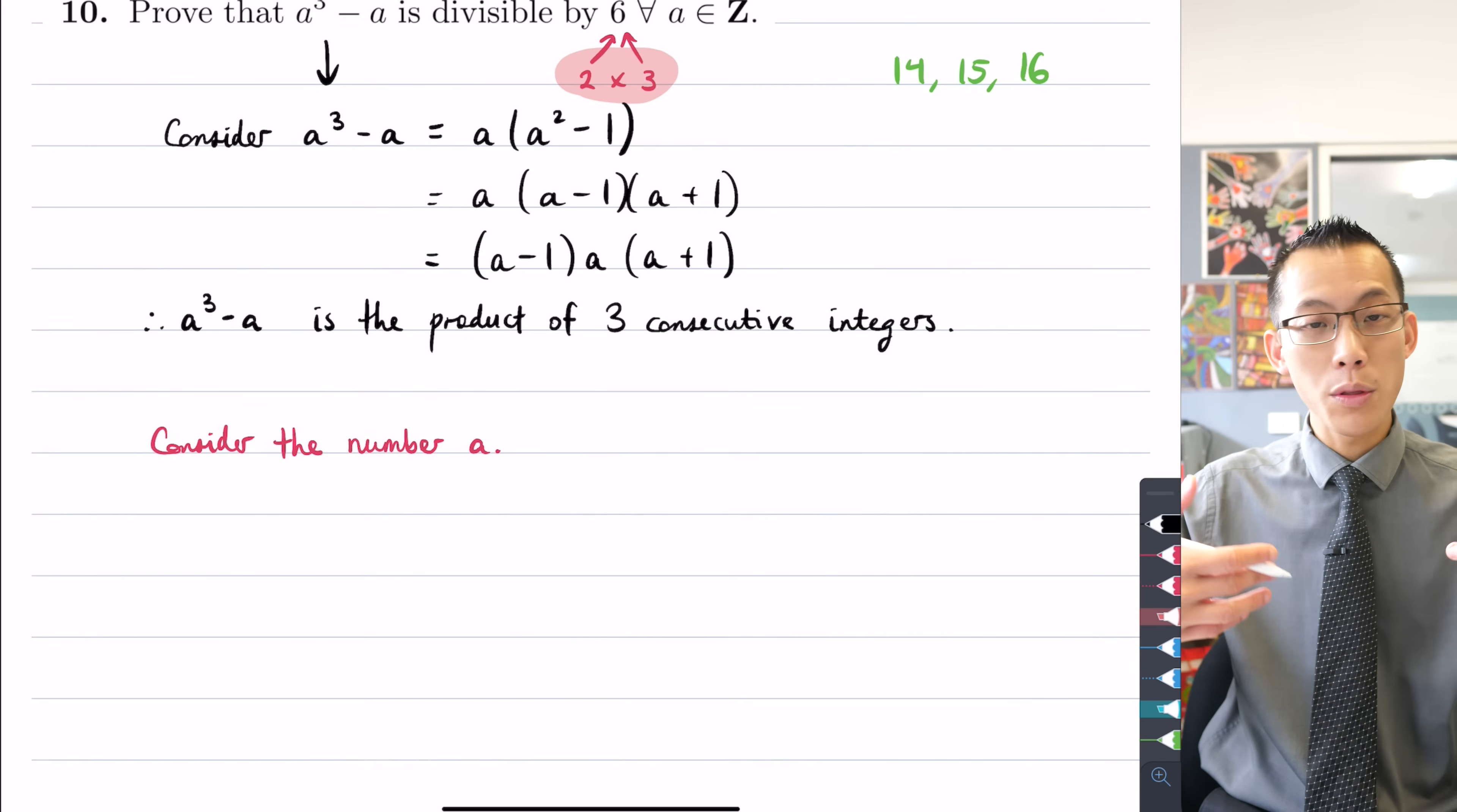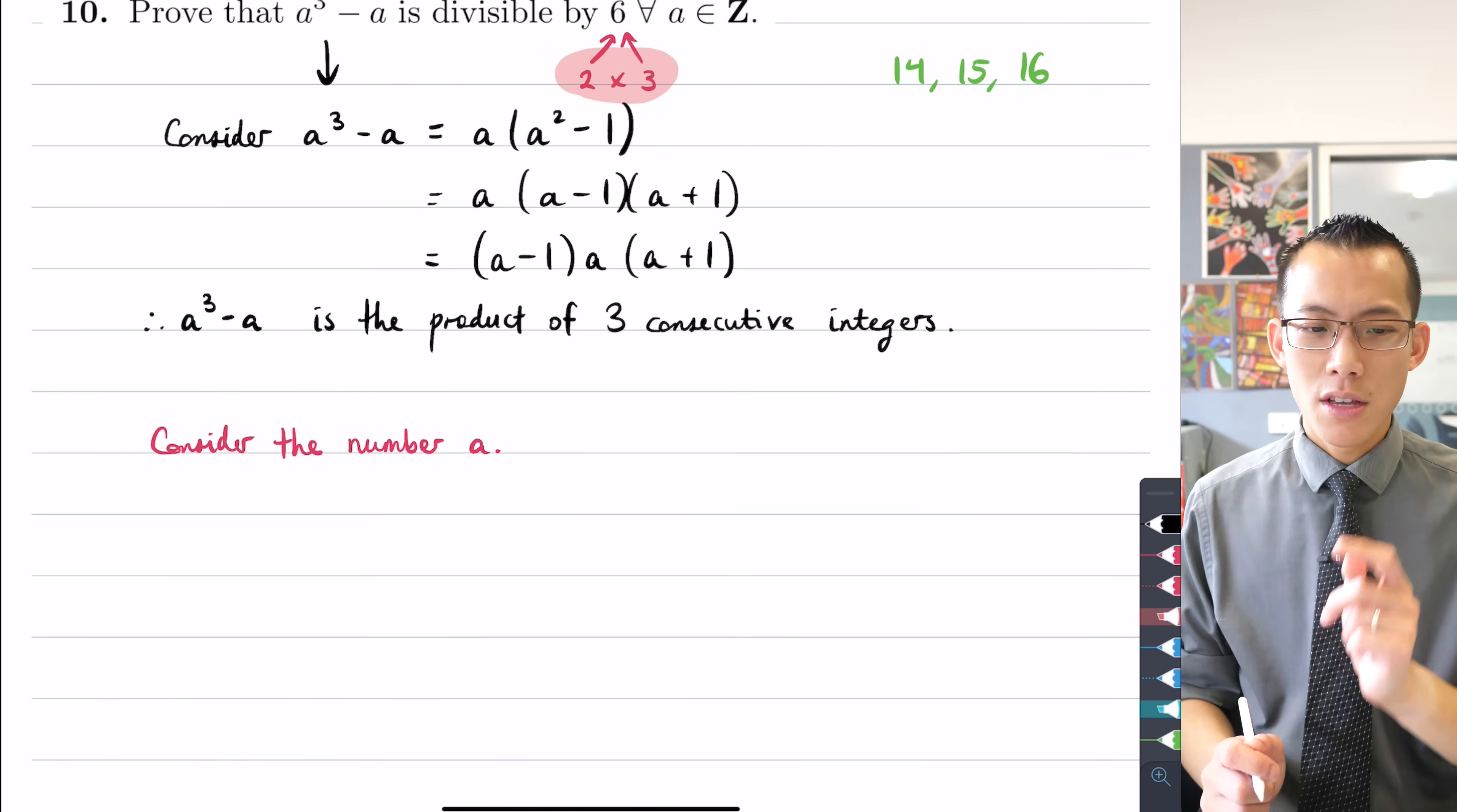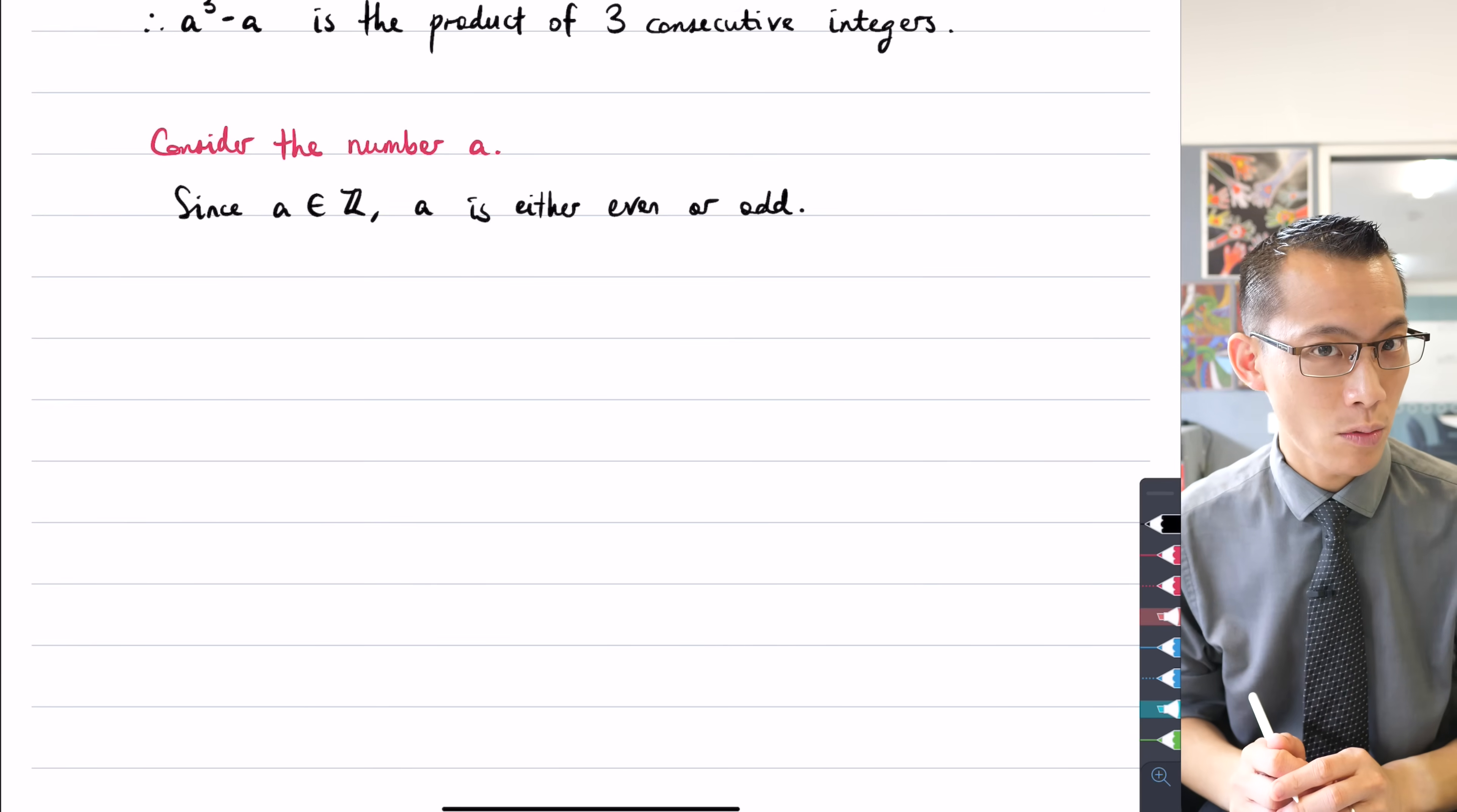What I can do is I can consider all the possibilities for a when it comes to being a multiple of two, whether it's divisible by two or not. Now we actually have a special name for this. It's either odd, which means it's not a multiple of two, or it's even, which means it is a multiple of two. So what I can say is, since a is an integer, a is going to be either even or odd. So you can see here what I'm doing is I'm taking all those infinite possibilities, a could be any integer, and I'm boiling it down to a finite set of cases, even odd. There's only two that I need to worry about.